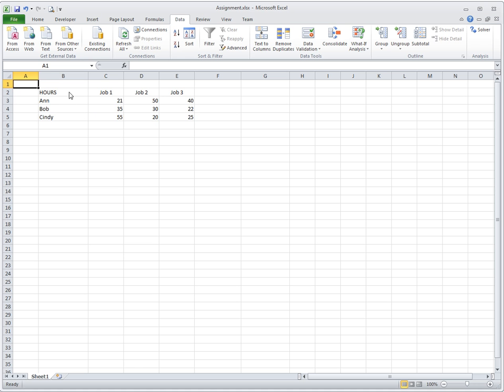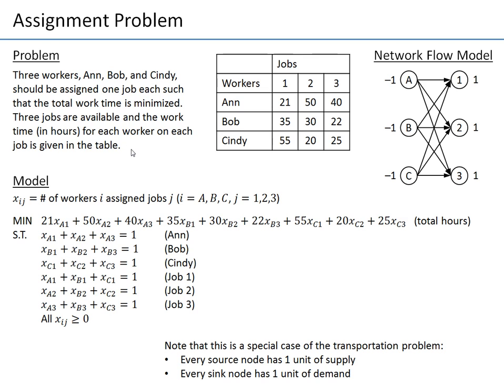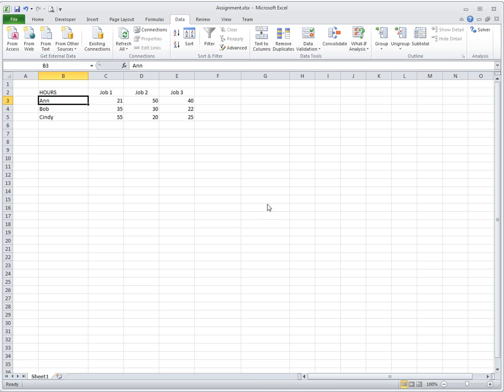So as before, in transportation problem, I have prepared here an Excel spreadsheet for the assignment problem, and so all I need to put here is the data for the hours worked. If a worker is assigned a job, how many hours will they work on this job? And I hope you notice that this problem is actually equivalent to, or a special case of transportation, because we really have a transportation problem here, except that now instead of having a large number of units of supply and demand, we have only one unit of supply here and one unit of demand. So you can see that assignment problem is a special case of a transportation problem.